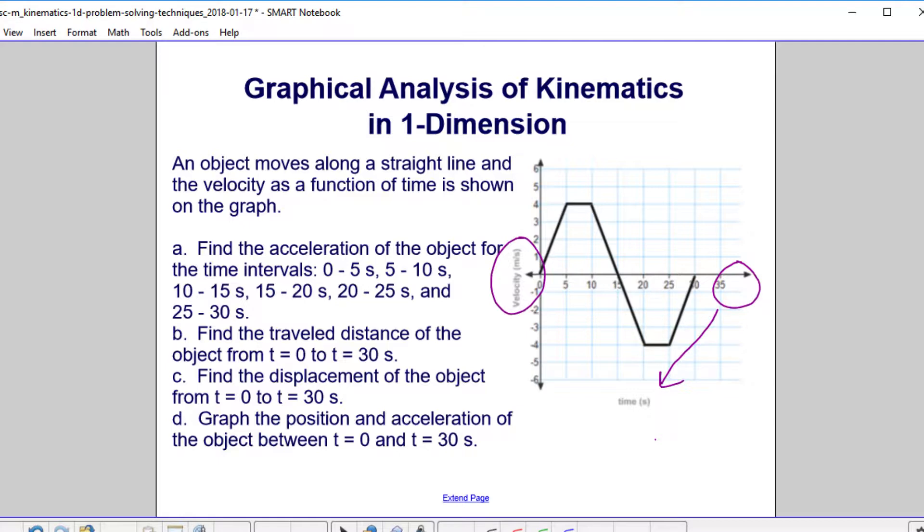You have to find the acceleration of the object for several different time intervals, then find the travel distance between t equals 0 and t equals 30 seconds, find its displacement, and finally graph the position and acceleration of the object between t equals 0 and t equals 30 seconds.